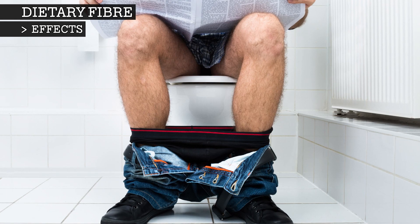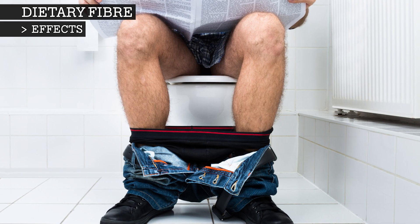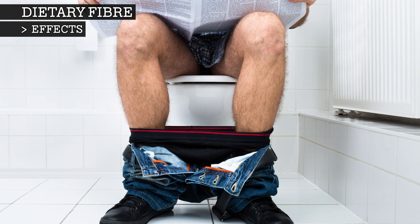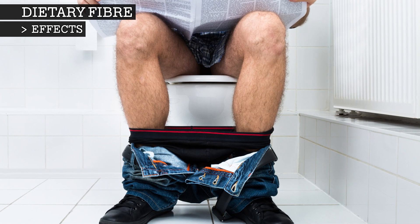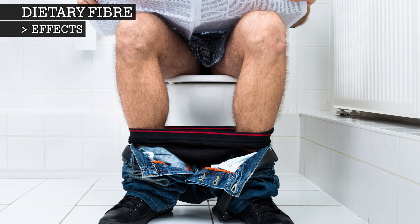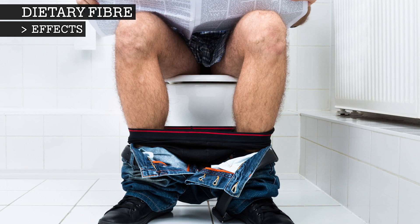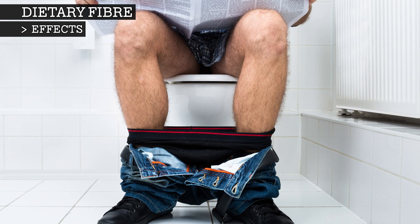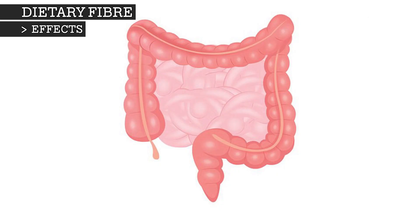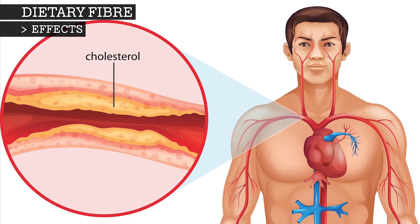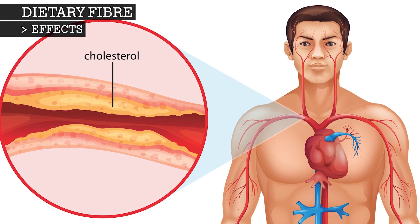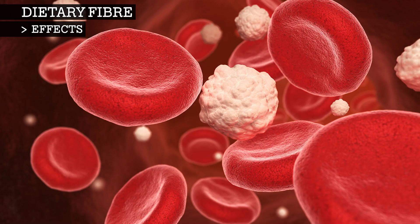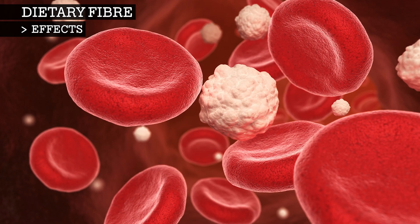A high fibre diet normalises bowel movements as it increases the weight and size of your stool and softens it, making it easier to pass. It also helps maintain bowel health, lowers cholesterol levels, and helps control blood sugar levels.